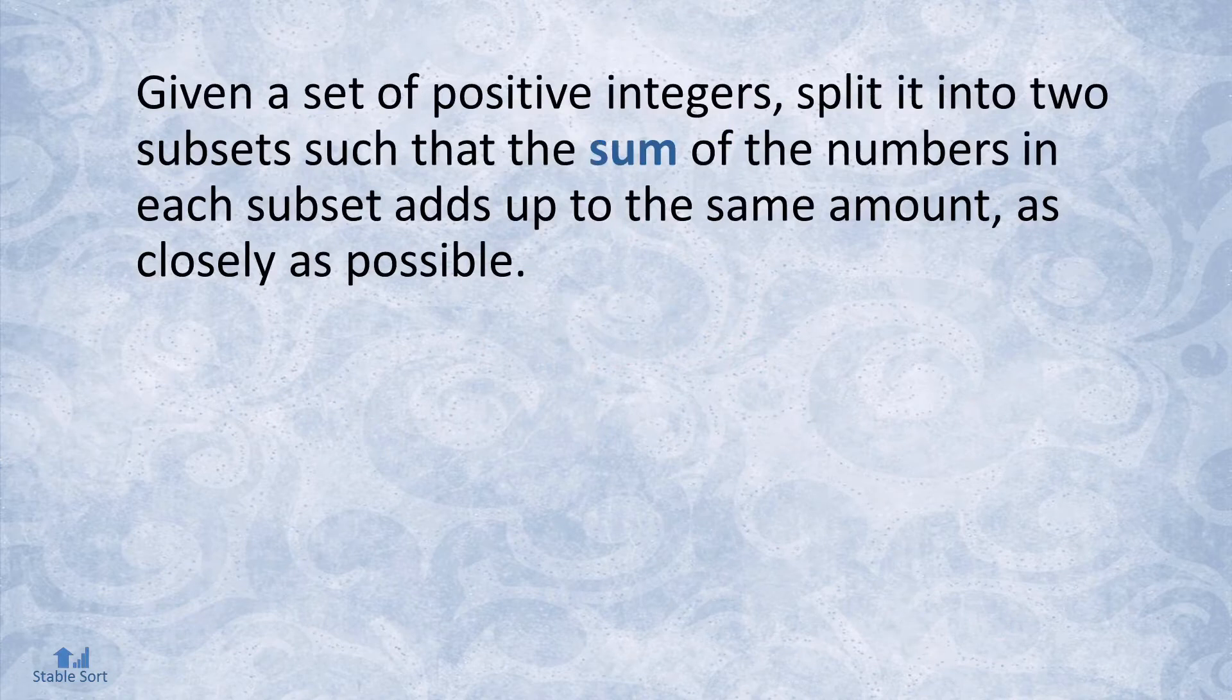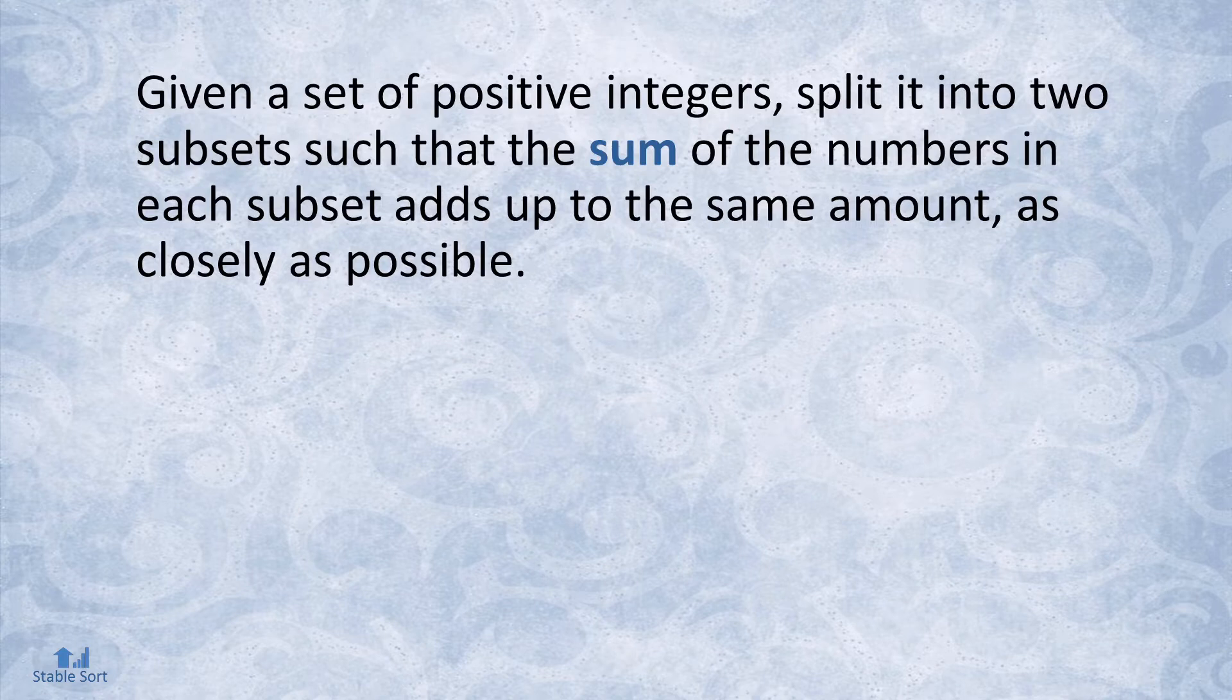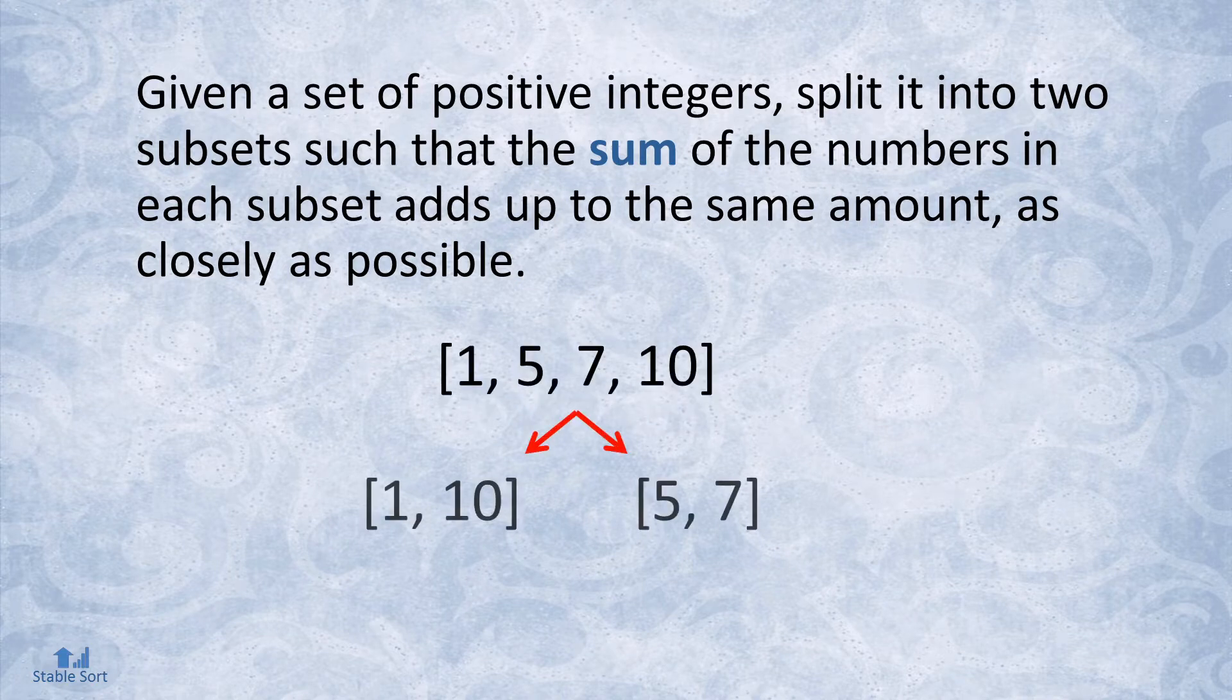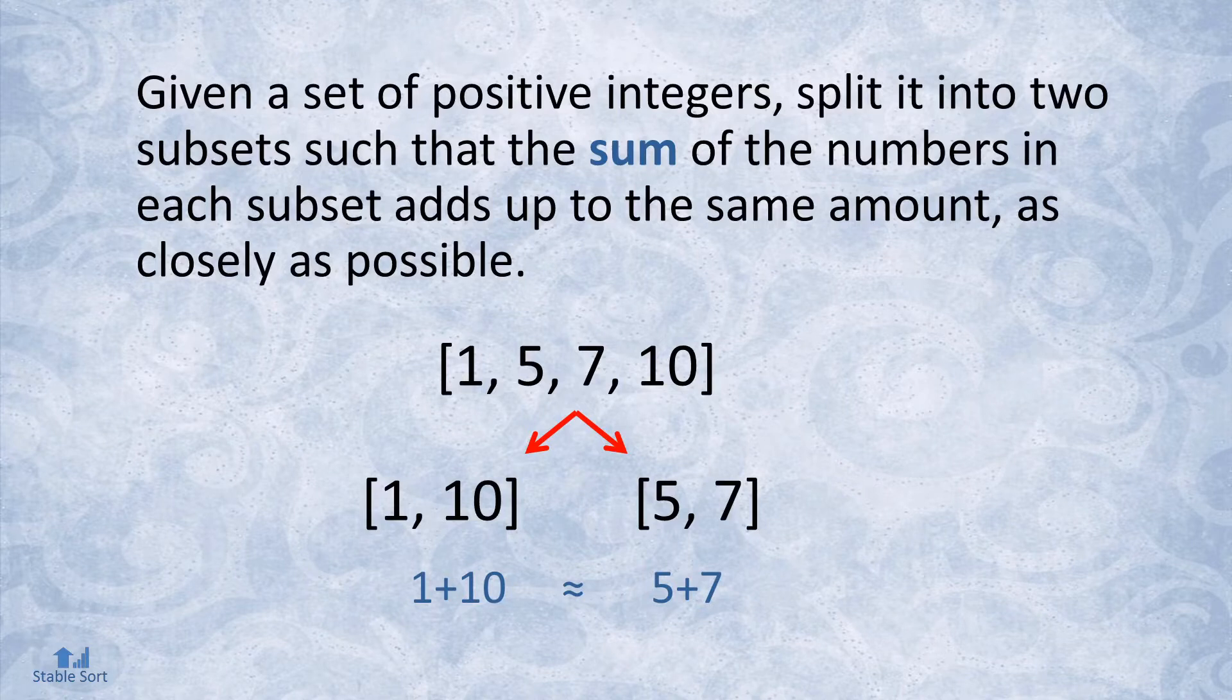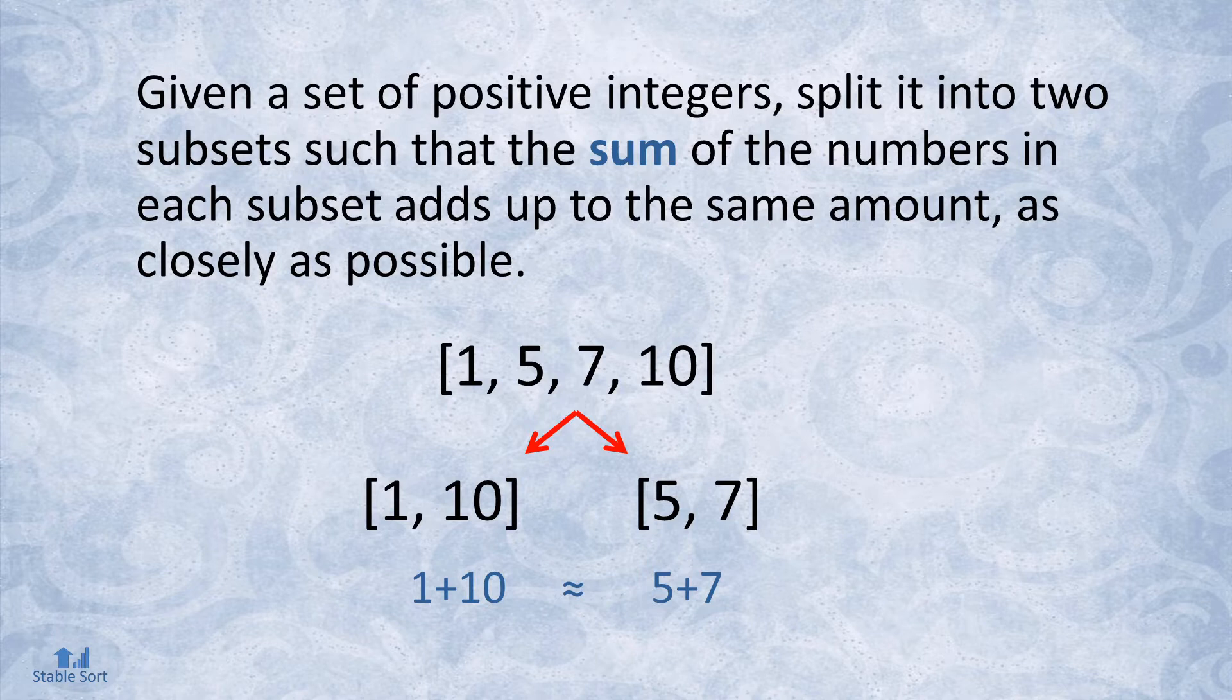Restating the problem definition. Given a set of positive integers, split it into two subsets, such that the sum of the numbers in each subset adds up to the same amount as closely as possible. In this example, the optimal way of partitioning this set is like so. For this problem, we're going to assume that we're dealing with multi-sets, meaning the sets are not restricted to have unique numbers.